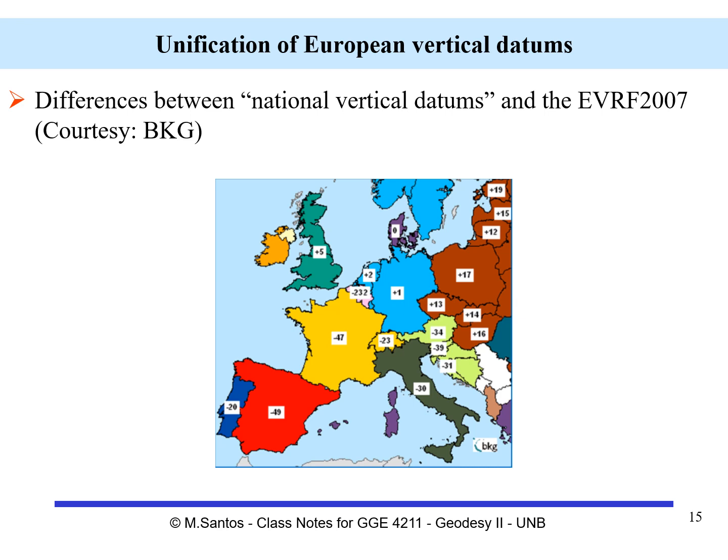We can see, for example, that Great Britain would have to apply plus 5 millimeters, Germany plus 1, Italy minus 30, France minus 45, and so on and so forth.